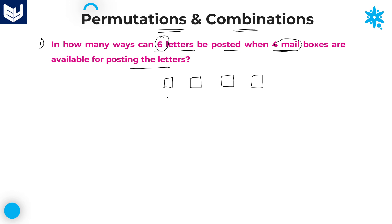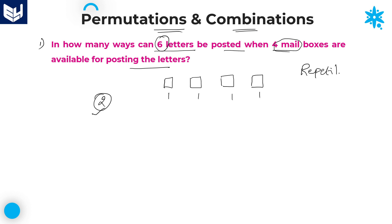If you observe carefully, even if I post one letter in each mailbox — one letter in this, one in this, one in this, one in this — after filling all 4 mailboxes I am still left with 2 letters. So to post those remaining 2 letters, we can choose any of the 4 mailboxes. This indirectly means that repetition of letters is allowed.